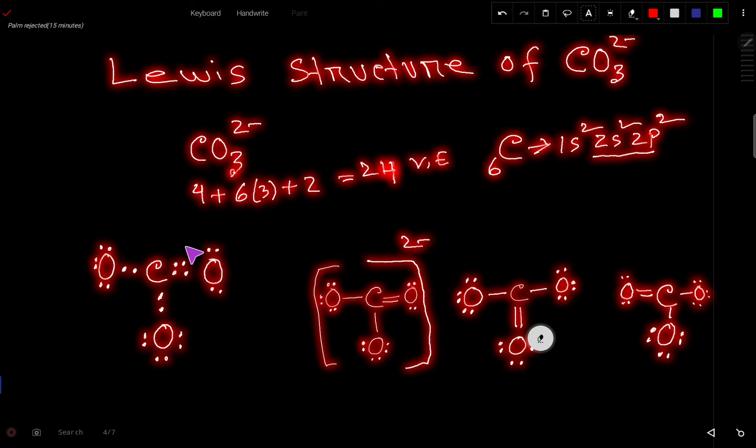Now this carbon has 8 valence electrons. Actually, this is the Lewis structure of carbonate ion.